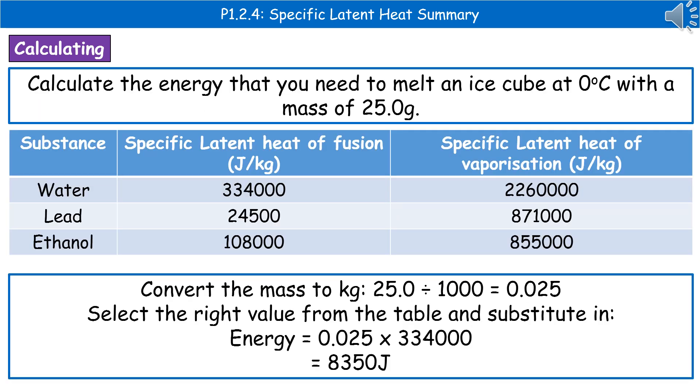So a typical question you could find on your exam paper to do with specific latent heat is the one given here. Calculate the energy that you would need to melt an ice cube at zero degrees Celsius with a mass of 25.0 grams. Then you get this table.